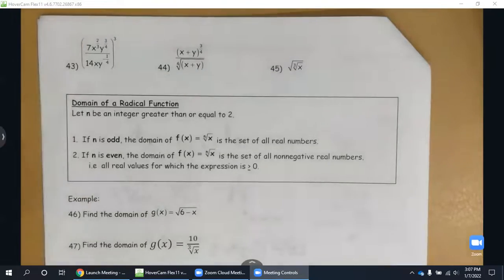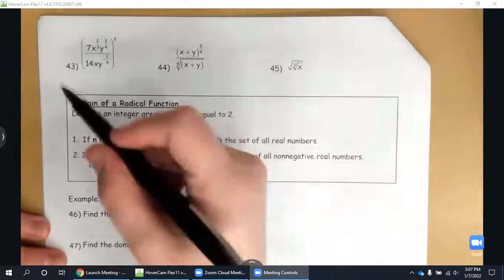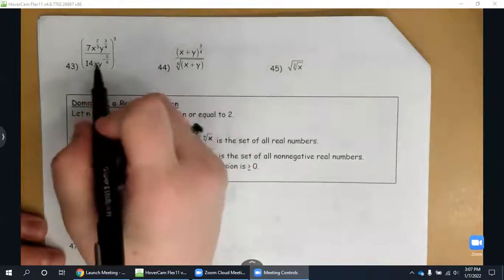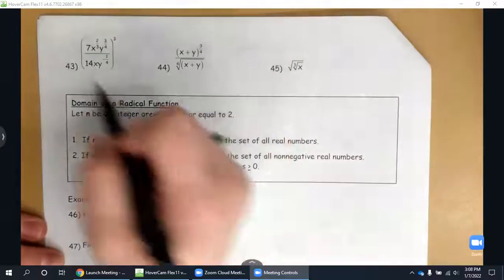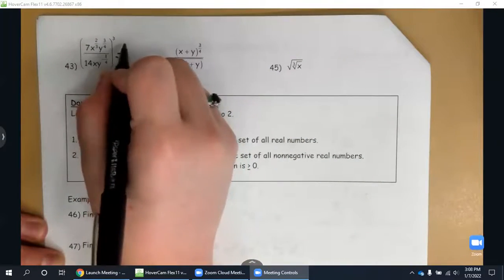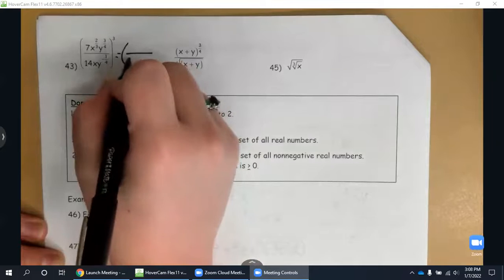Alright, finishing up these notes. We're going to be simplifying these expressions. I'm going to start with what's inside my parentheses first. Seven over fourteen, that is going to reduce to be one over two.